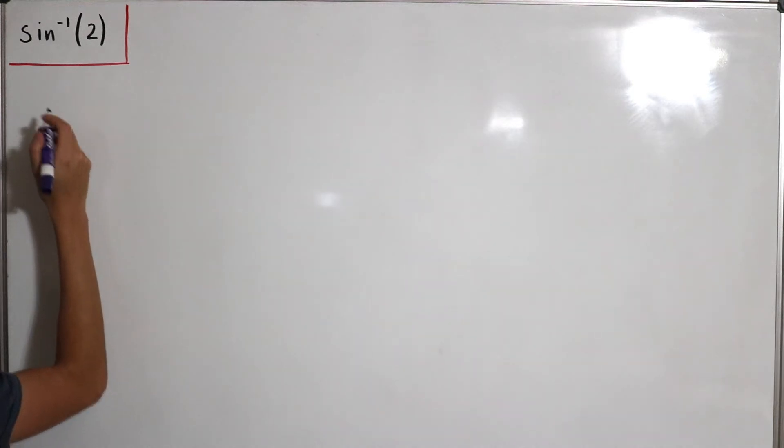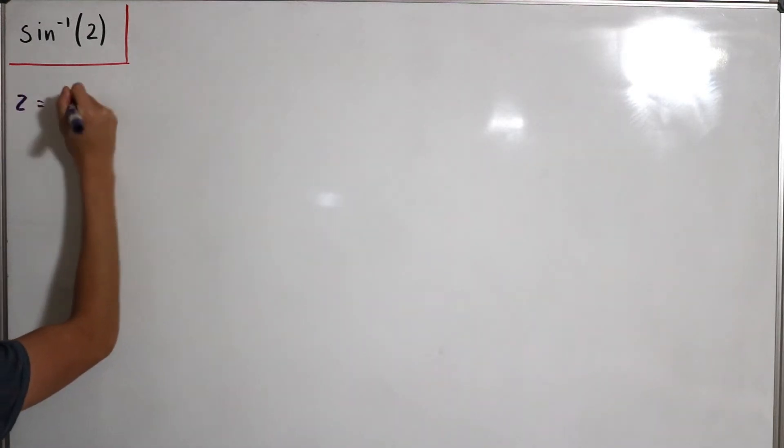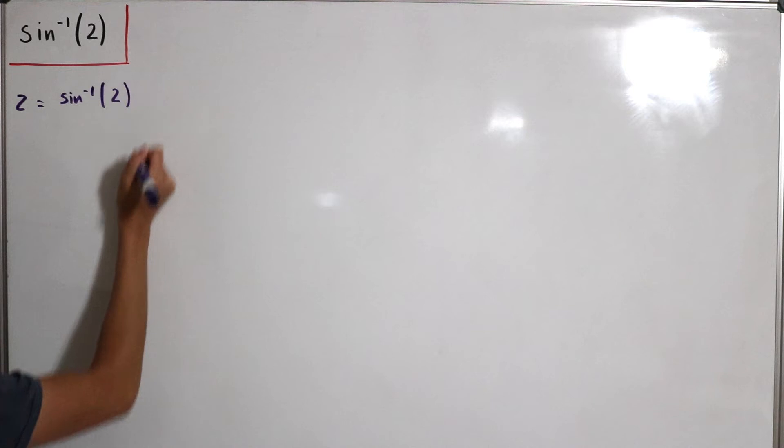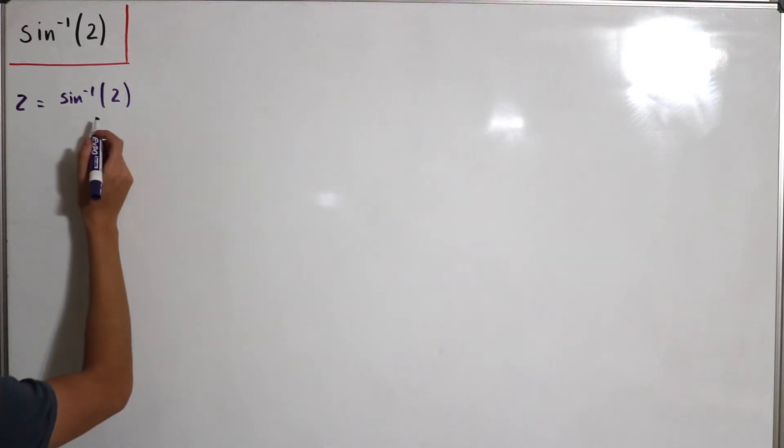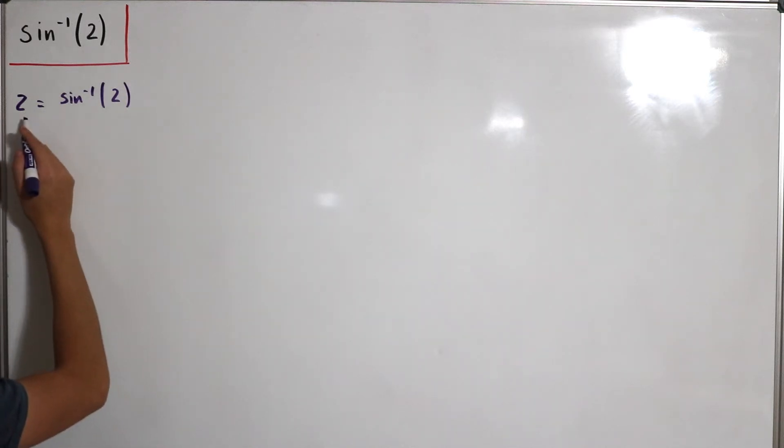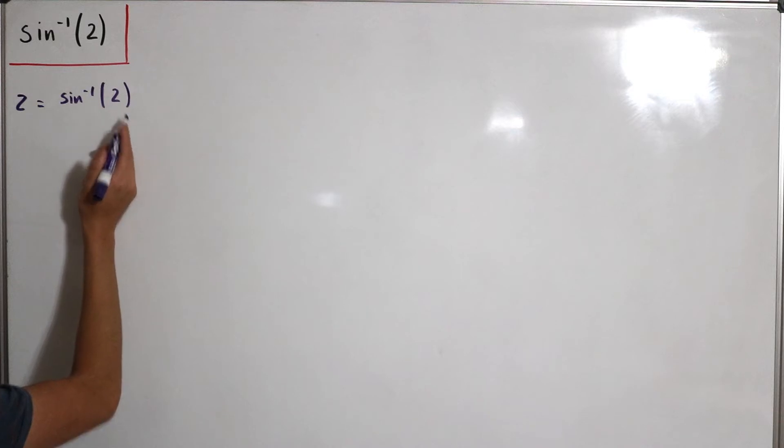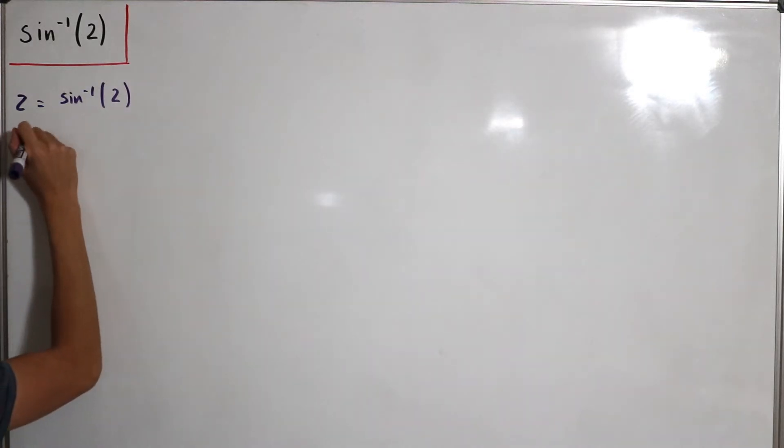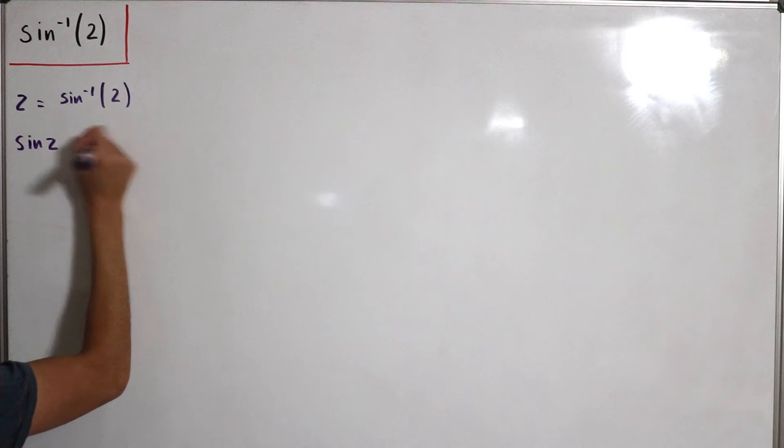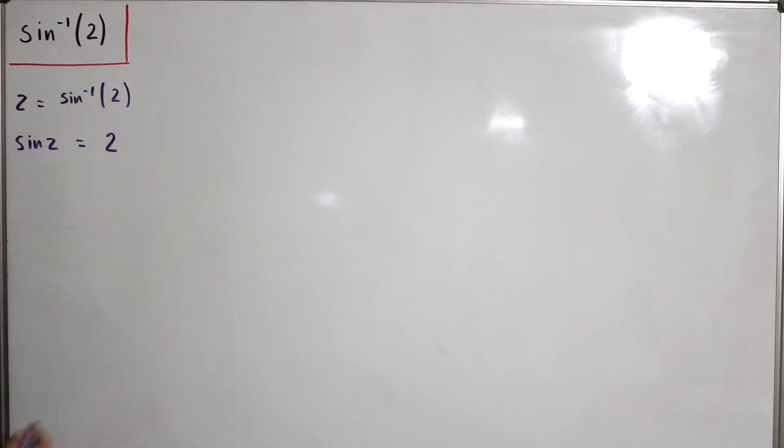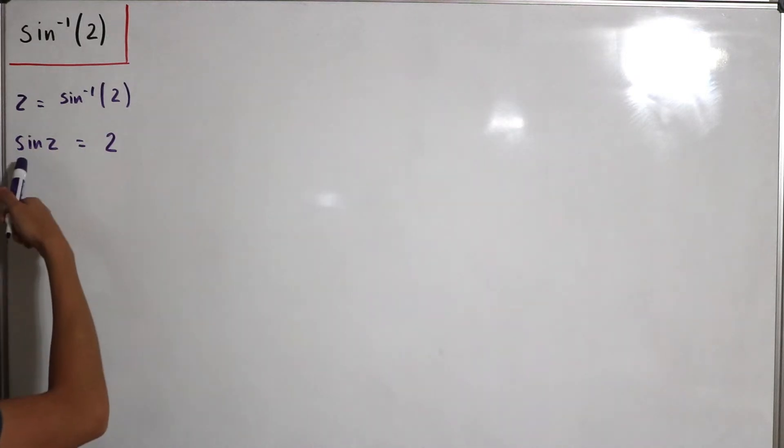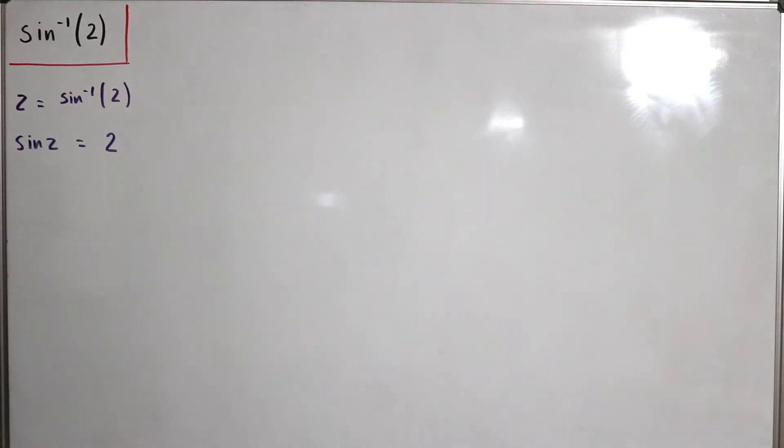I'll just call this z equals inverse sine of 2. Now if I want to solve for the value on its own, then I can just take the sine of both sides, so I get sine of z is equal to 2. And hence using the definition in terms of the complex exponential formula, we can use that definition and set that equal to 2.